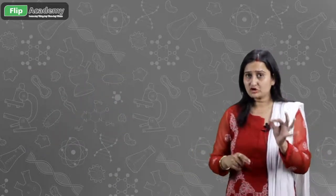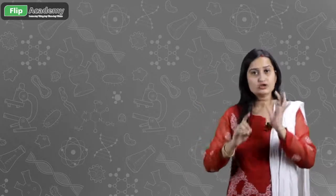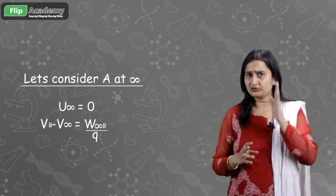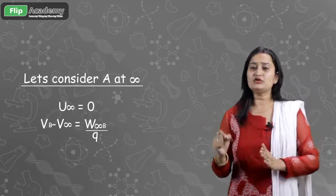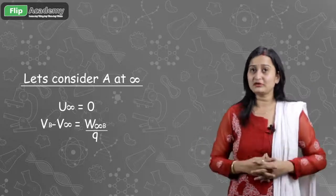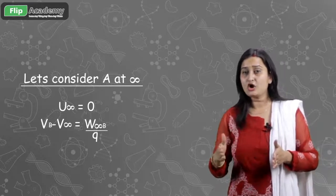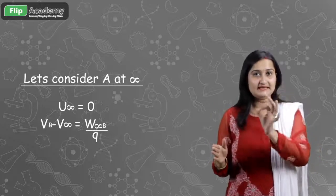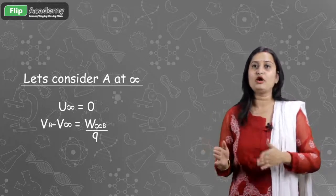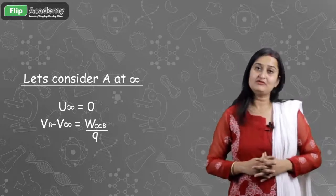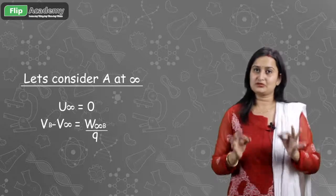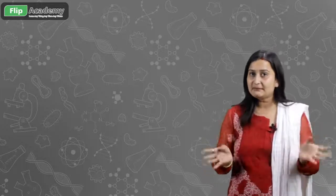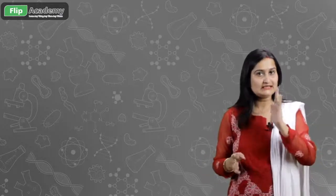In the definition, the charge comes from infinity to that point. If A is at infinity, then the potential energy at infinite is zero. The formula modifies to VB minus V(infinity) = W(infinity to B) upon Q. Since potential energy at infinity equals zero, this is the work done in moving the charge from infinity to point B per unit charge. This path independence confirms the conservative nature.